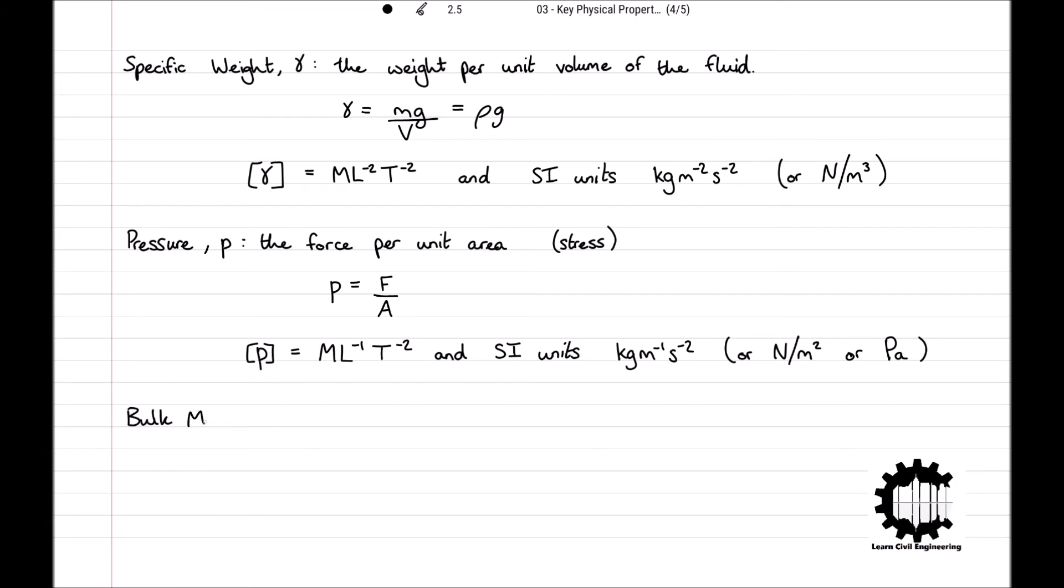Bulk modulus, denoted by an uppercase K, is defined as the degree of compressibility of a fluid. There will be a future lecture looking at the bulk modulus of a fluid in more detail, with examples, but for now, the bulk modulus for a fluid is defined as K = ρ/Δρ × Δp, where ρ is the density of the fluid and p is the pressure of the fluid.